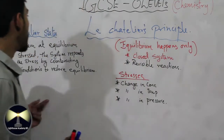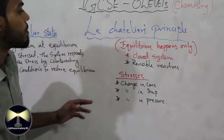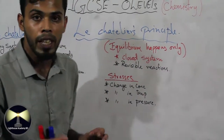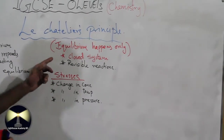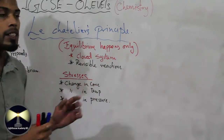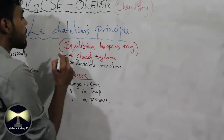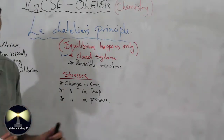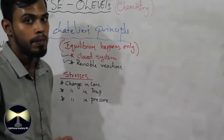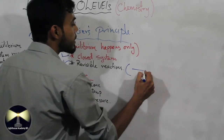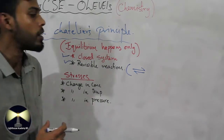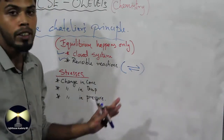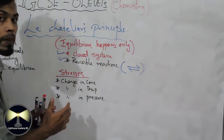Now let's go to the reaction. First, you have to understand: Le Chatelier's Principle is only applicable for equilibrium reactions. Equilibrium reactions require two conditions: the reaction should be in a closed system — meaning the gases or liquids cannot escape — and it should be a reversible reaction. A reversible reaction means the reaction can go forward and backward, shown by a double arrow (half-arrow each way).